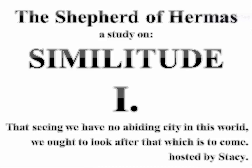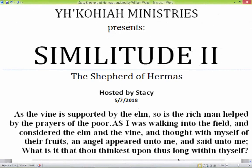In Similitudes 2, we talked about having an abundance — how having an abundance of things is given to us by Yah, by the Father, so that we can give to those that are lacking. And by giving to those that are lacking, we receive the blessing and they receive the blessing. That was Similitudes 2, talking about the vines and the elm tree.